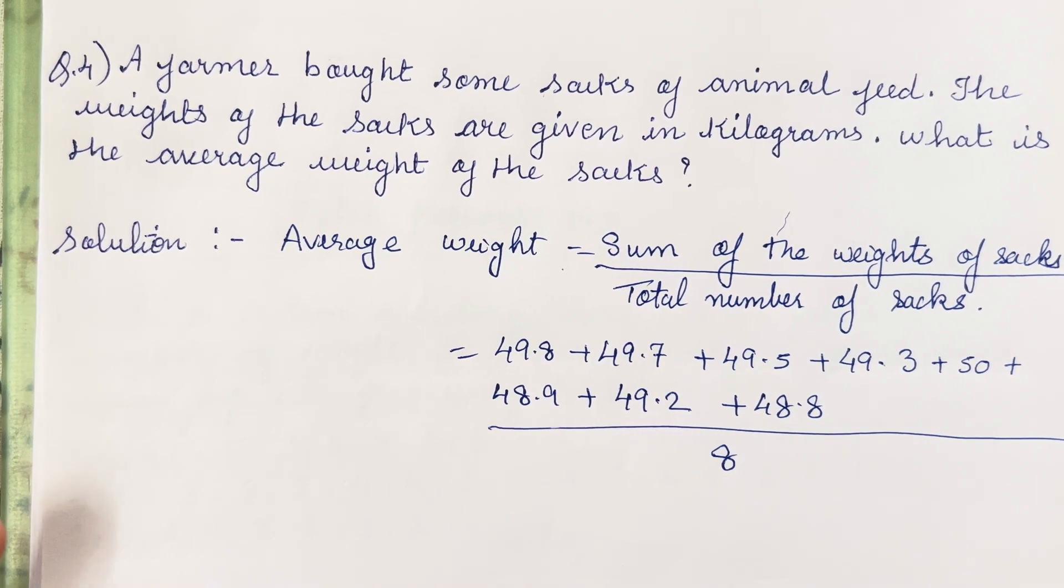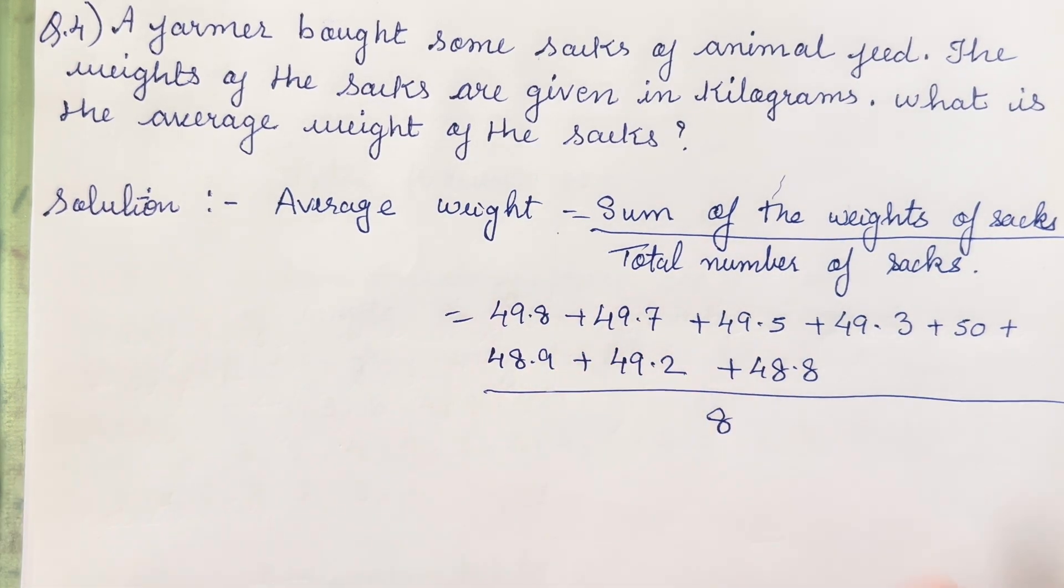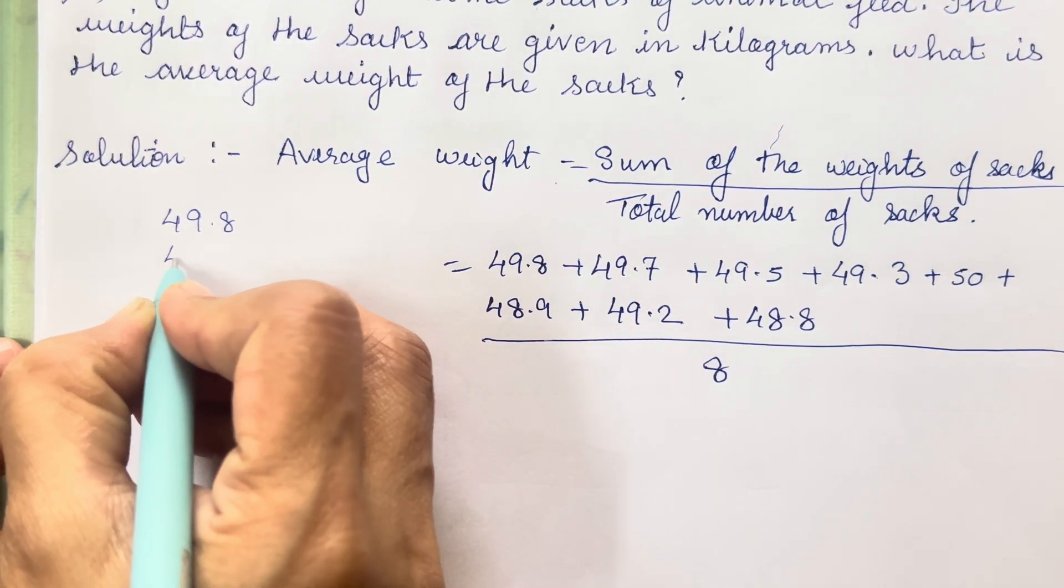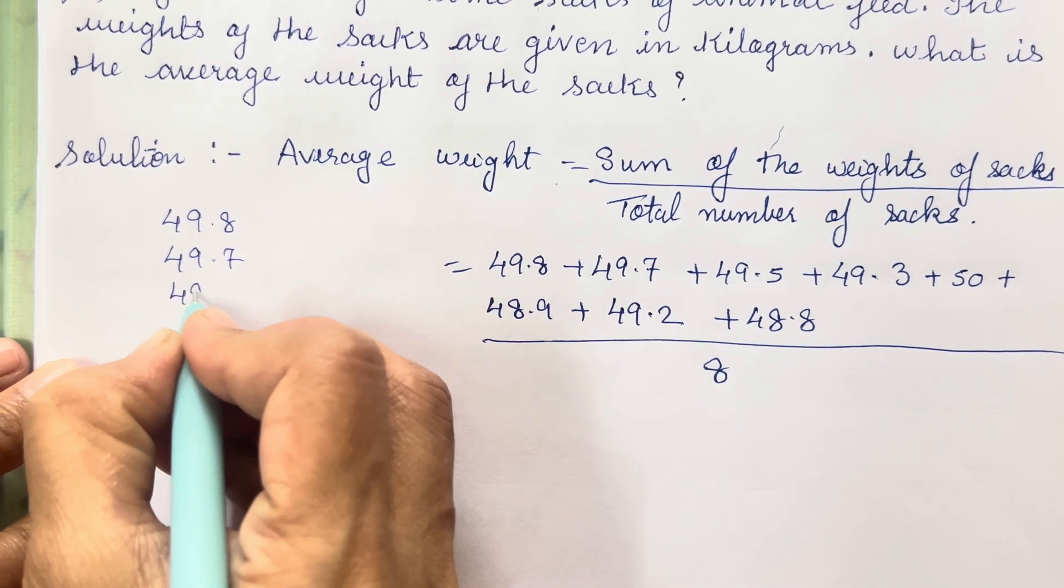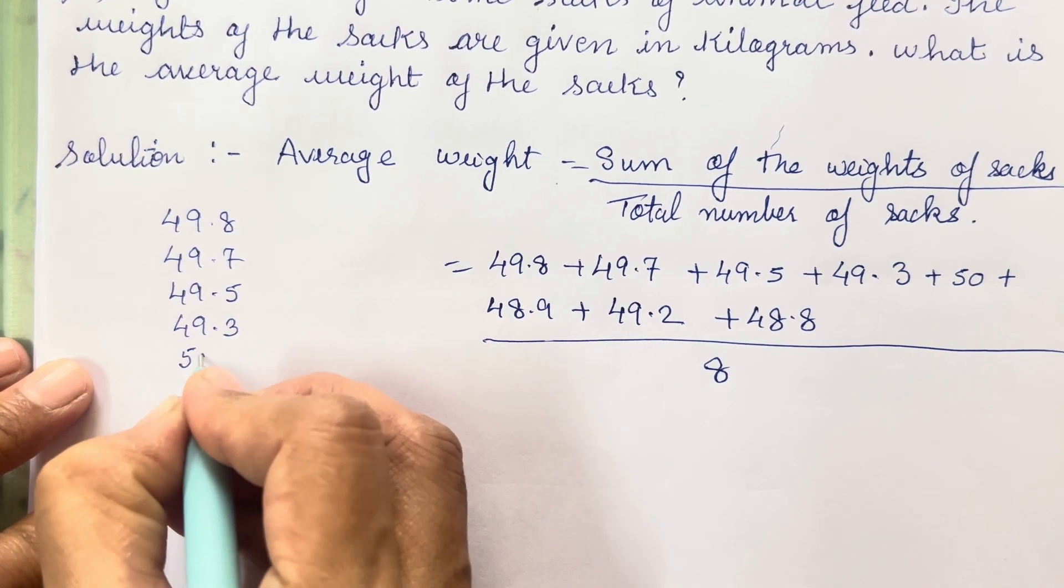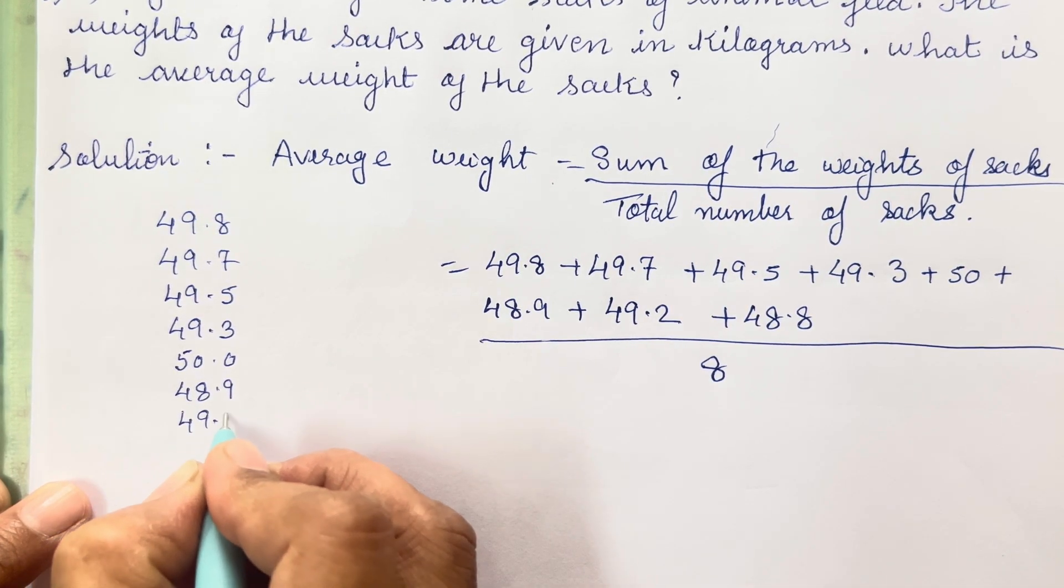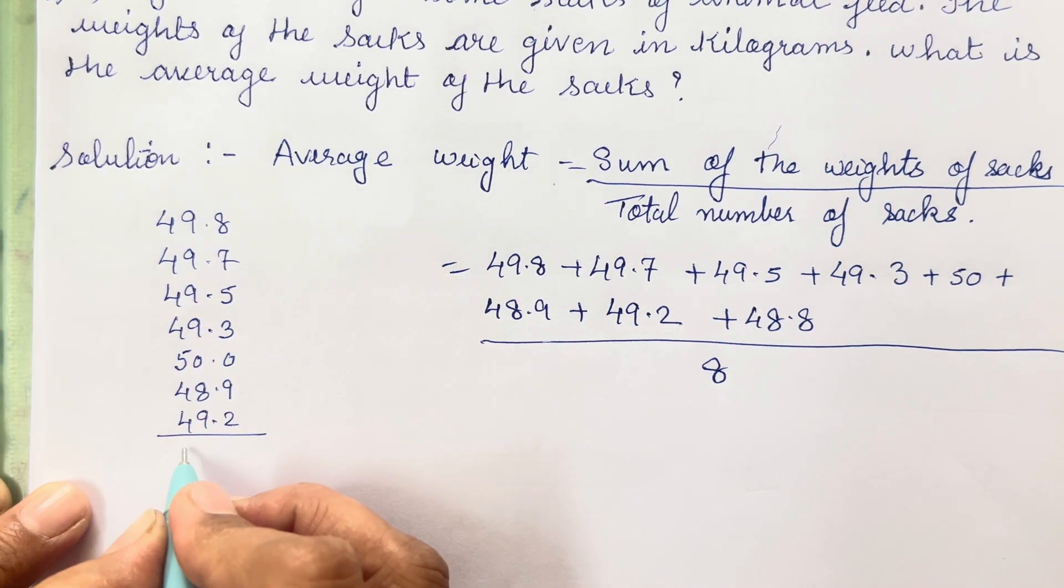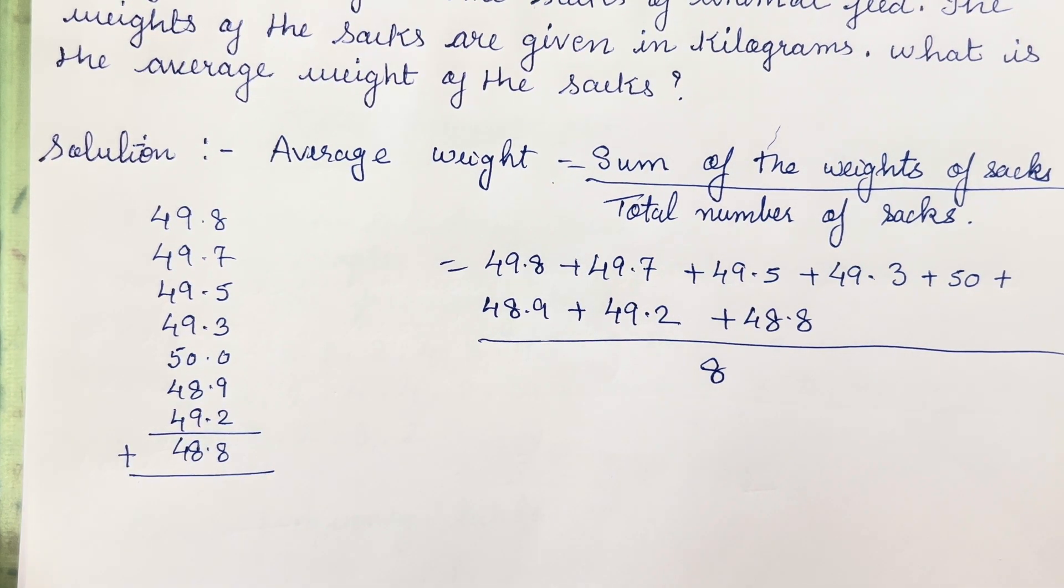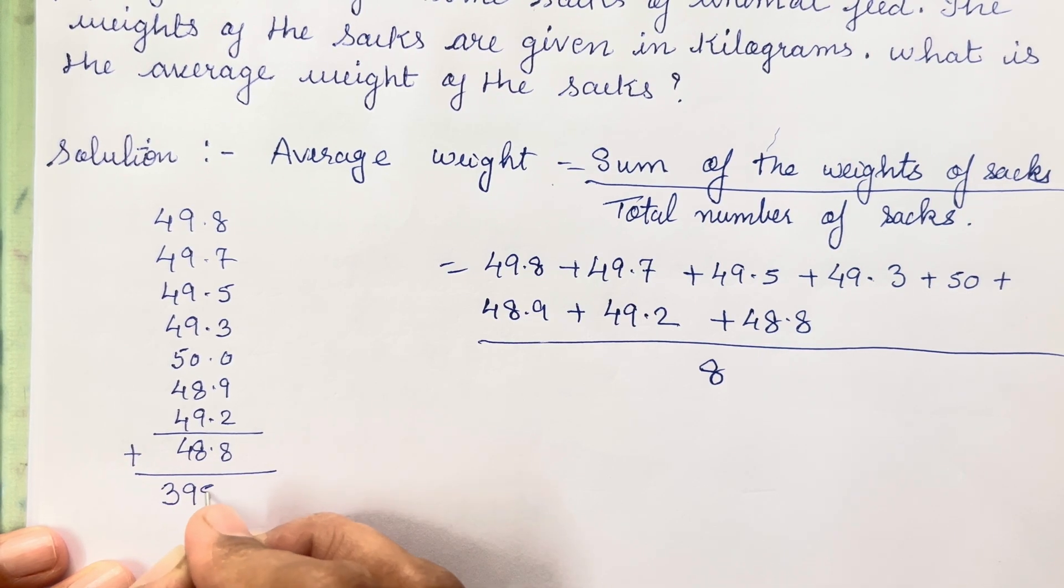49.8 plus 49.7 plus 49.5 plus 49.3 plus 50 plus 48.9 plus 49.2 plus 48.8 divided by 8. Now over here for addition many of you are going to find it difficult because decimal numbers. So I am going to show you how you will have to arrange it vertically in order to add. First is 49.8, 49.7, 49.5, 49.3, 50. Remember it is 50 so 0 will come over here. 48.9, 49.2 and then we need to add it. So in this way you will have to add and once you add it the number you are going to achieve is 395.2.